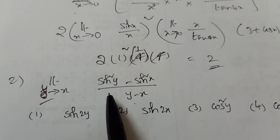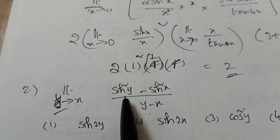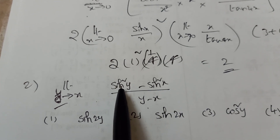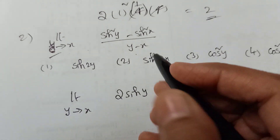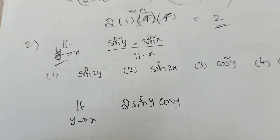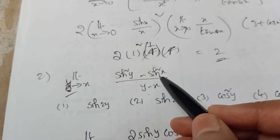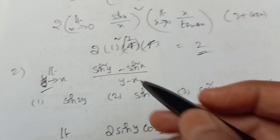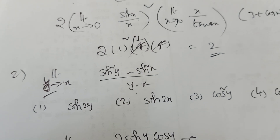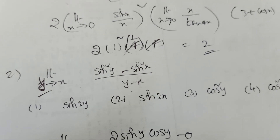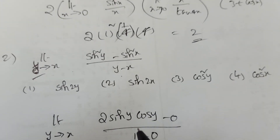Taking the derivative of the numerator with respect to y: derivative of sin²y is 2siny·cosy, and derivative of −sin²x is 0 because x is a constant. Denominator derivative: derivative of y is 1, derivative of x is 0. So we get 2siny·cosy / 1.